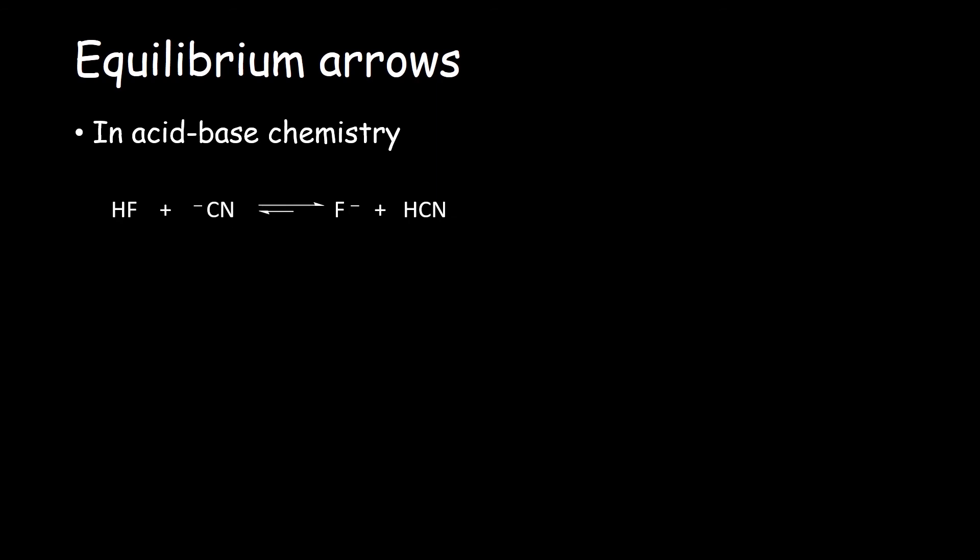So, for example, hydrofluoric acid is a stronger acid than hydrocyanic acid. The equilibrium favors the product side as seen by the longer arrow pointing right and a shorter arrow pointing left.